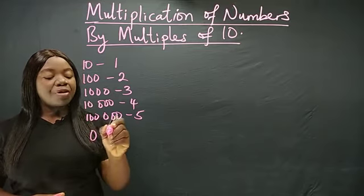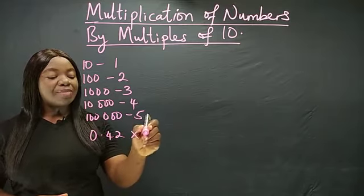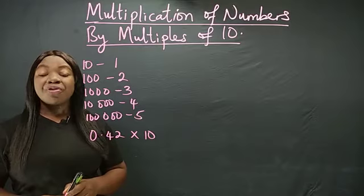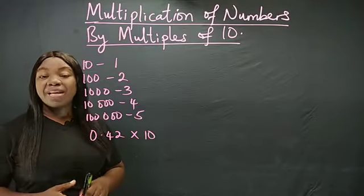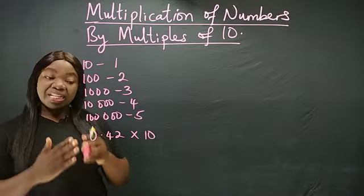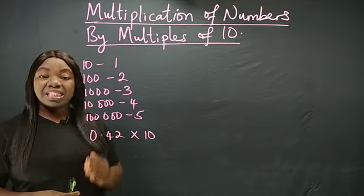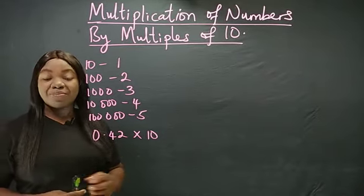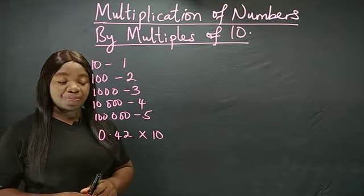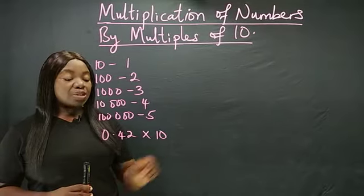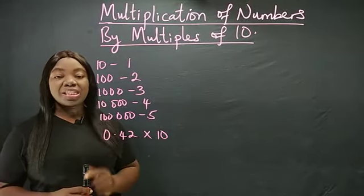The first one is 0.42 times 10. What is 0.42 times 10? Now when multiplying by multiples of 10 like this, you begin from the decimal point counting to the right because it is multiplication. Now counting from the right, we have 10, which has just single zero.